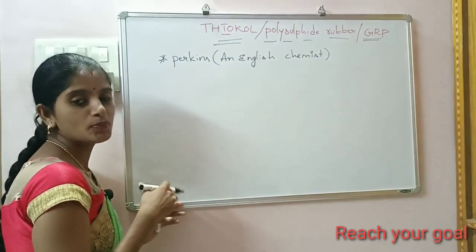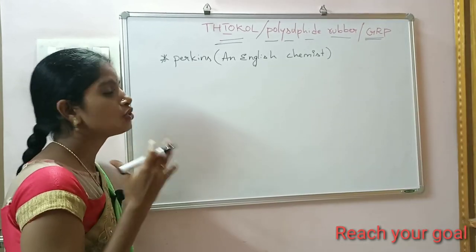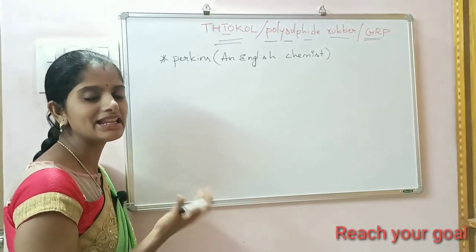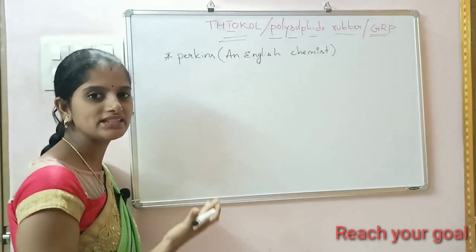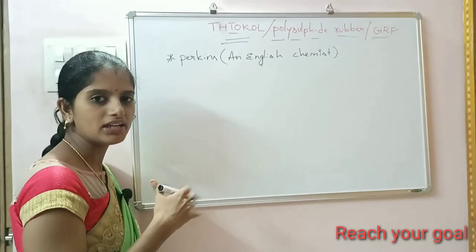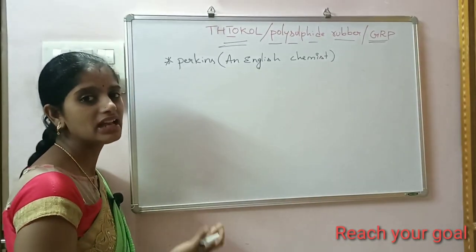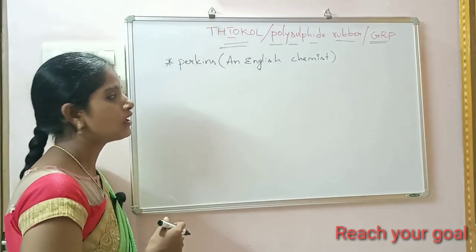Thiokol was produced from two different monomers — ethylene dichloride and sodium polysulphide — which underwent condensation polymerization to form the product Thiokol.